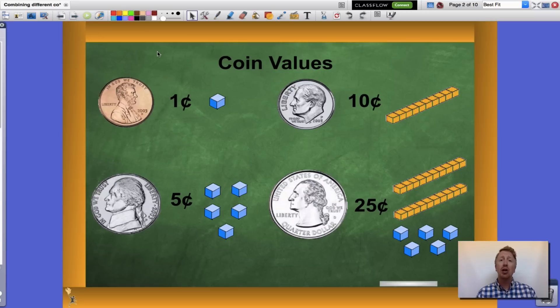Before we get started, let's talk about coin values as a review. Pennies are always worth 1 cent, nickels are worth 5 cents, dimes are worth 10 cents, and quarters are worth 25 cents.